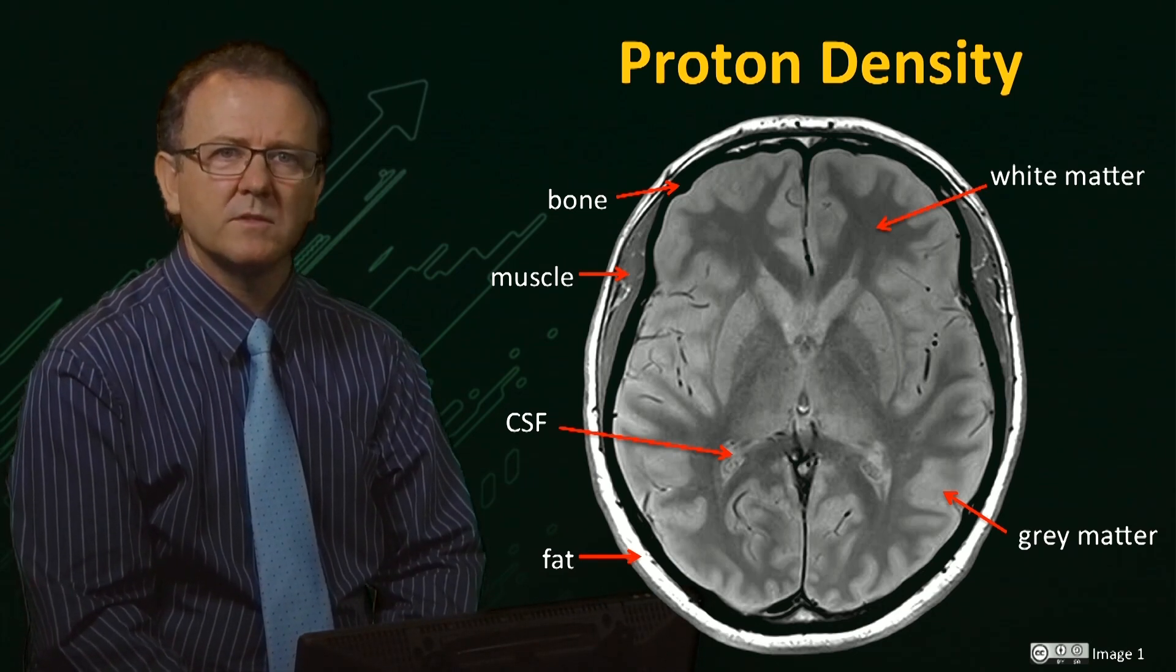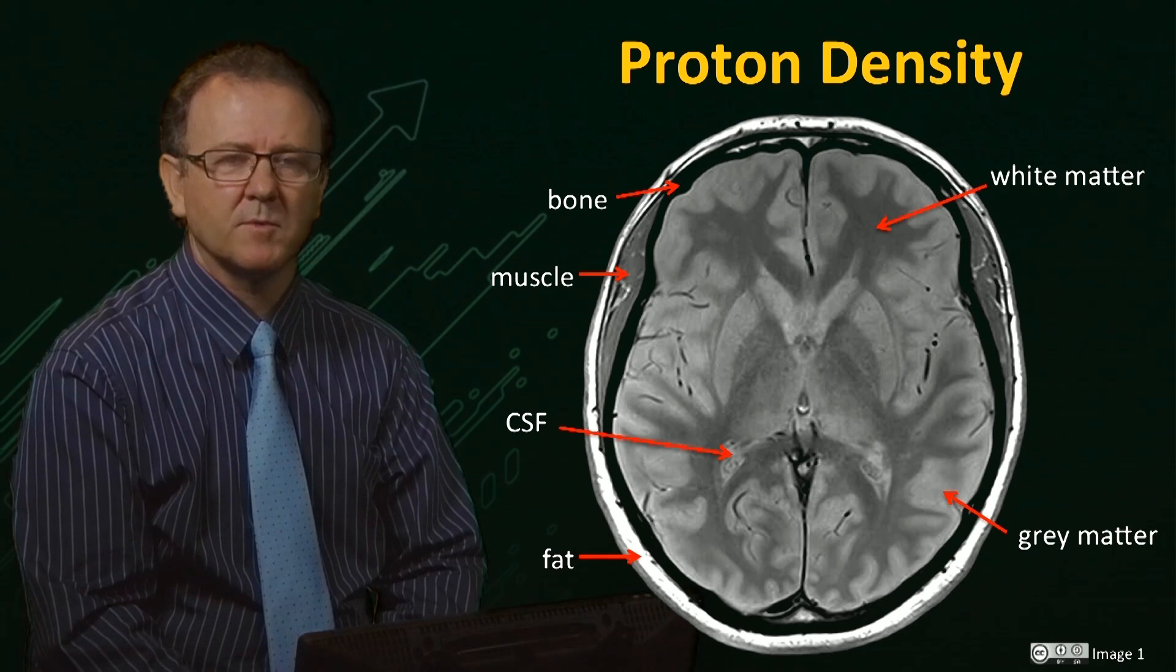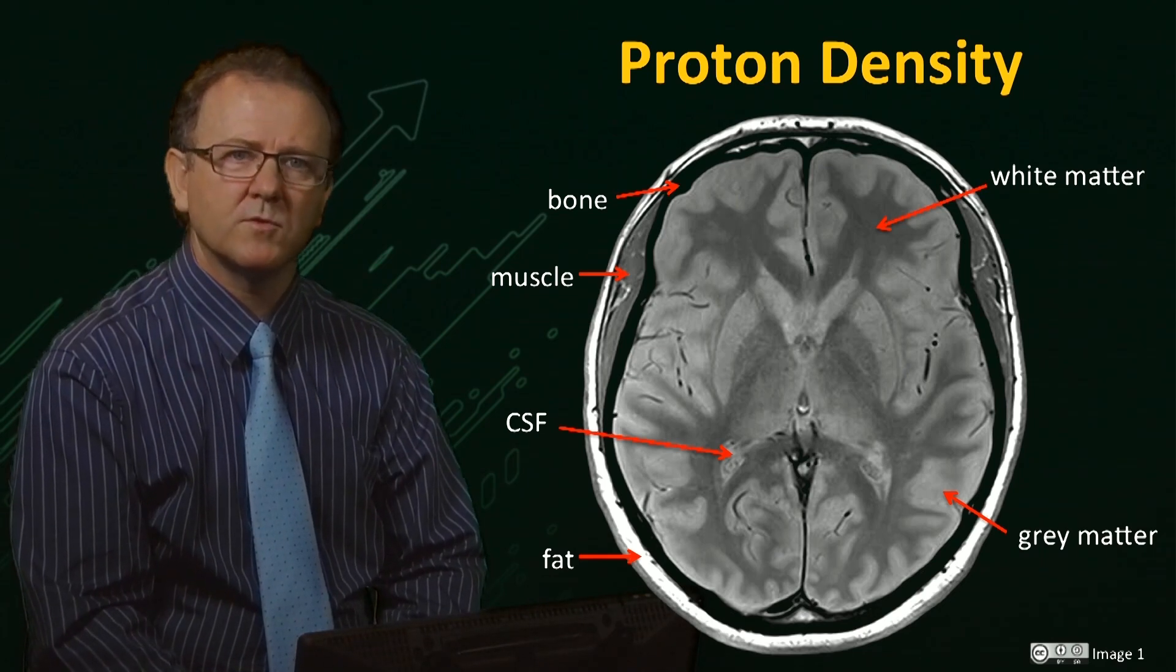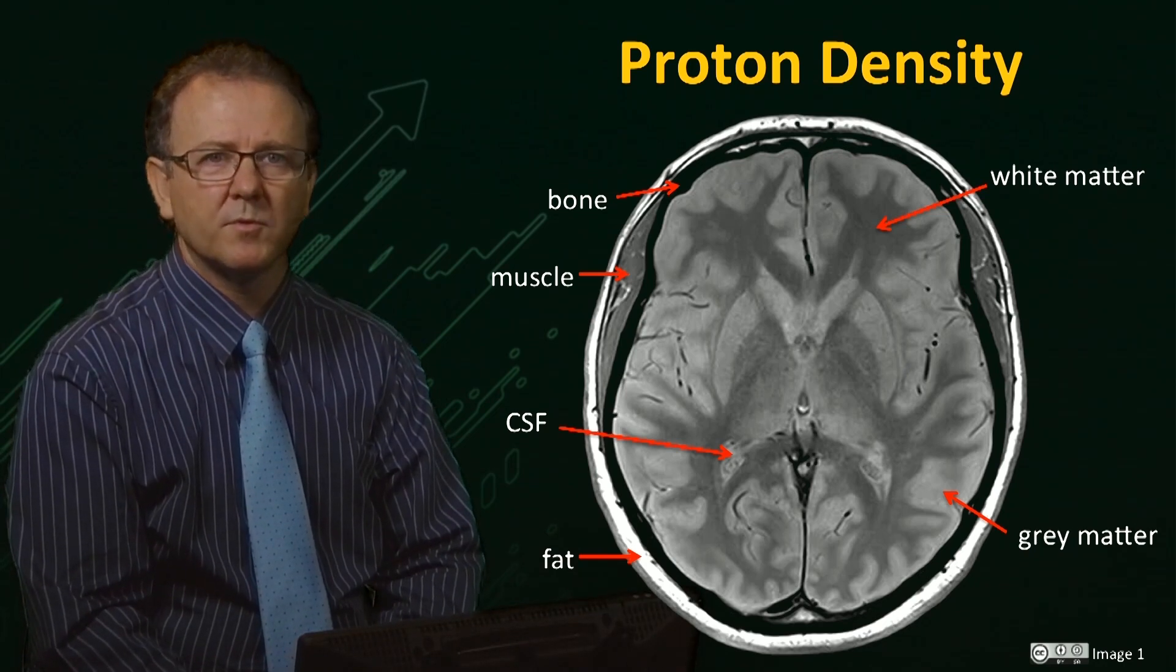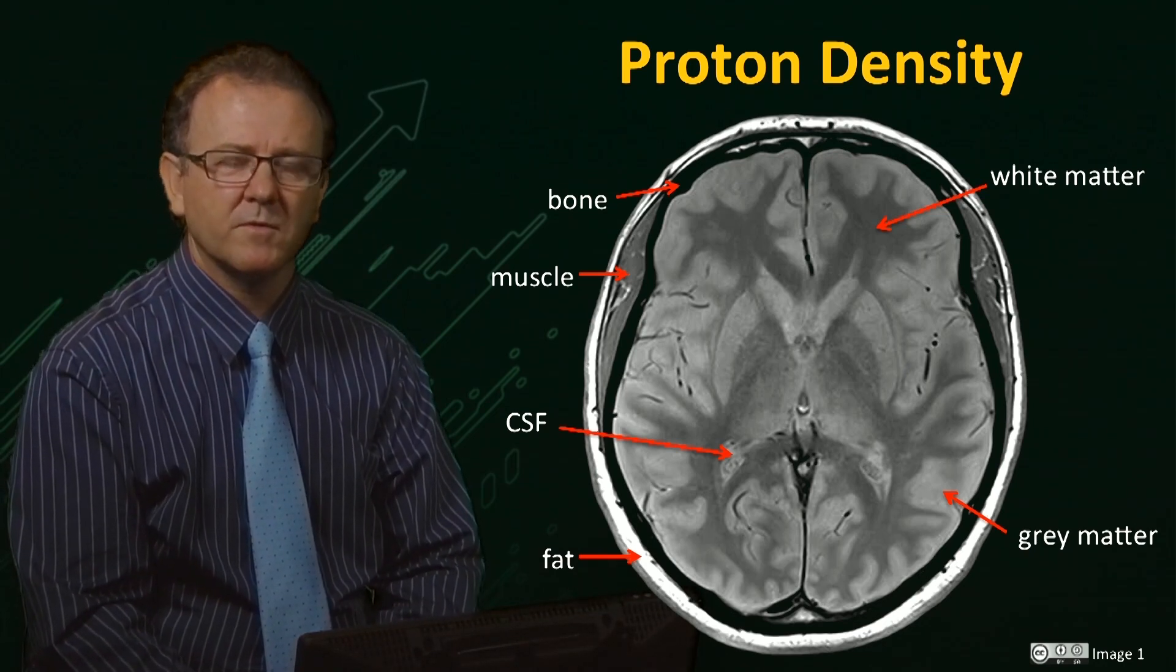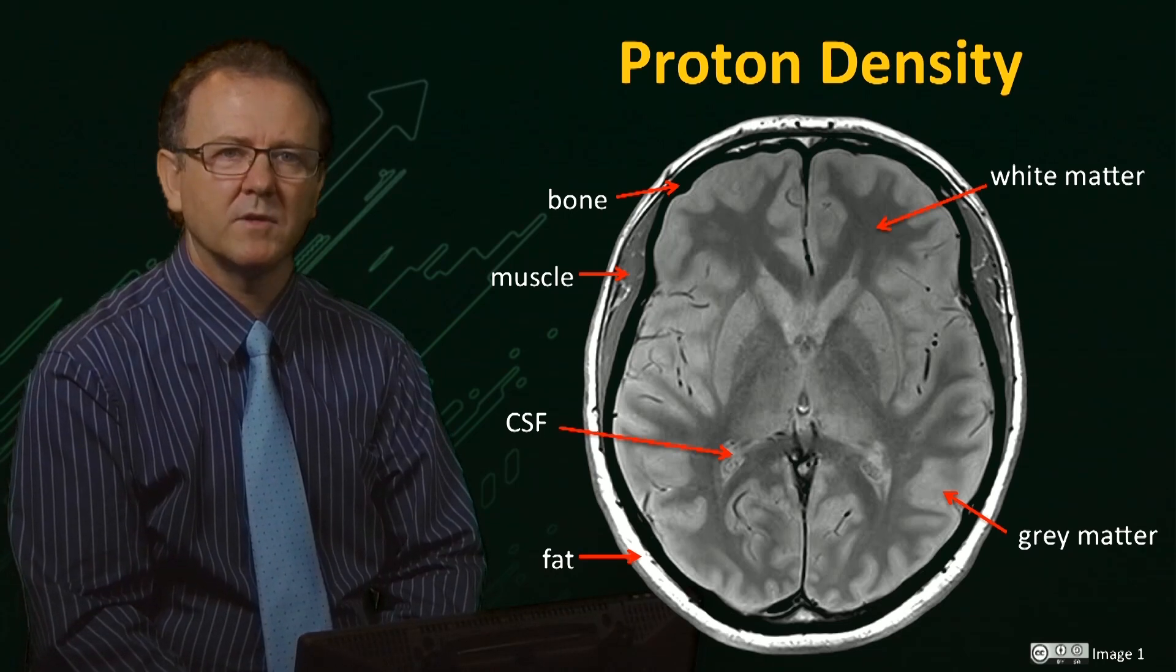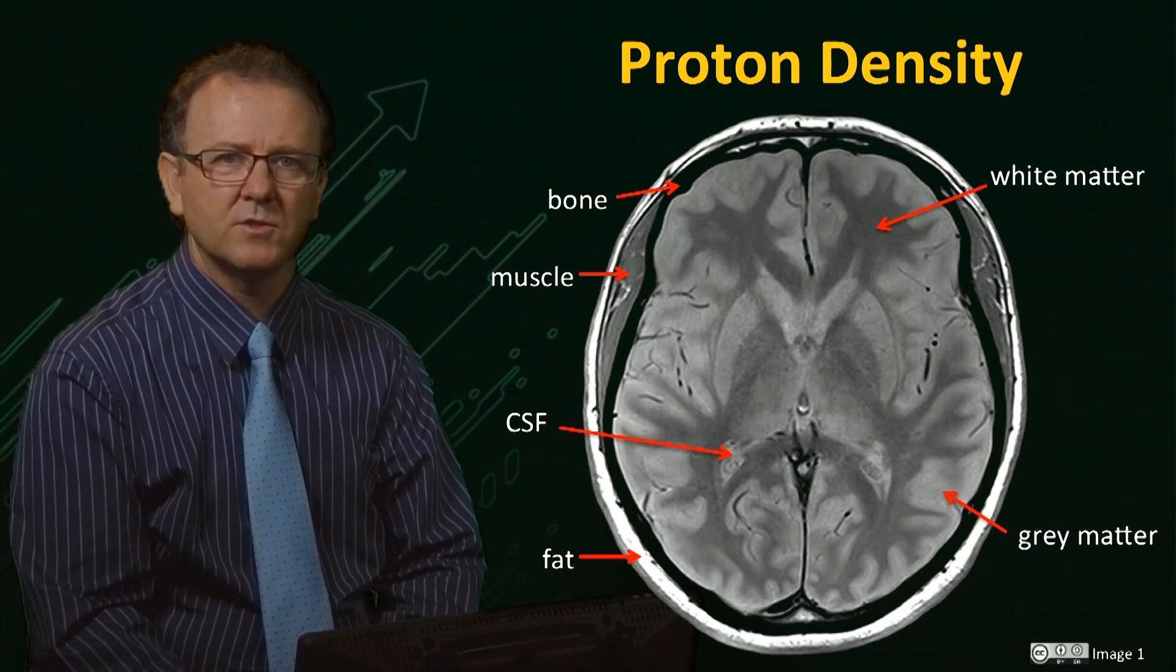However the cerebral spinal fluid is difficult to distinguish and there is little contrast between other brain structures. So although a proton density image provides some anatomical information, it would be useful to have more detailed structural information within organs. Fortunately we are able to improve image contrast by virtue of the variation in relaxation behavior of water within the different tissue types.